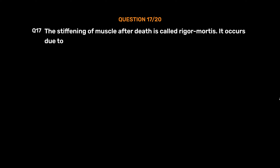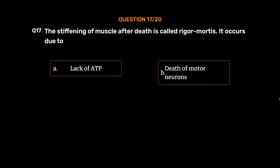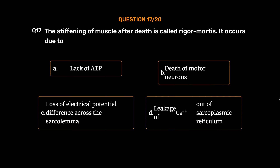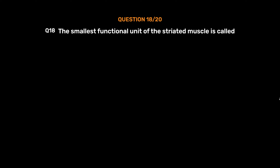Question No. 17. The stiffening of muscle after death is called rigor mortis. It occurs due to: Option A. Lack of ATP, Option B. Death of motor neurons, Option C. Loss of electrical potential difference across the sarcolemma, Option D. Leakage of Ca²⁺ out of sarcoplasmic reticulum. The correct answer is Option A, lack of ATP.